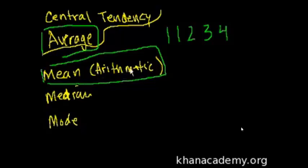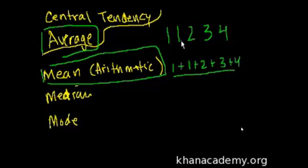So the mean or the arithmetic mean is probably what you're most familiar with when people talk about average. And that's essentially you add up all the numbers and you divide by the numbers that there are. So in this case it would be 1 plus 1 plus 2 plus 3 plus 4. And you're going to divide by five numbers. This is 11 over 5. That's 2 and 1 fifth. So that's equal to 2.2.